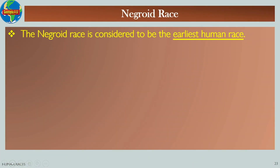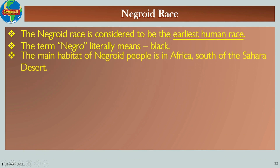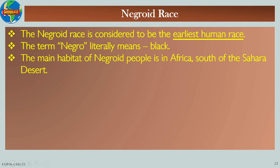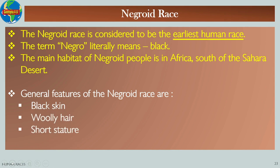Negroid race: The Negroid race is considered to be the earliest human race. The term 'Negro' literally means black. The main habitat of Negroid people is in Africa, south of the Sahara Desert. General features of the Negroid race are: black skin, woolly hair, short stature, and they are dolichocephalic in nature.